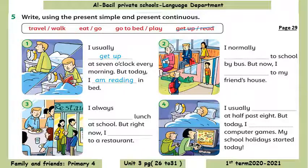Now page 29, number five: write using the present simple and present continuous. Here you are going to use present simple and present continuous in sentences according to time markers you have studied before. Number one: I usually get up at seven o'clock every morning, but today I'm staying in bed. Number two: I normally go to school by bus, but now I'm going to my friend's house.